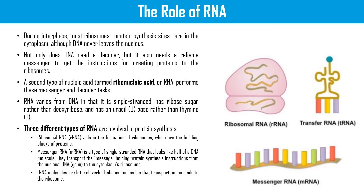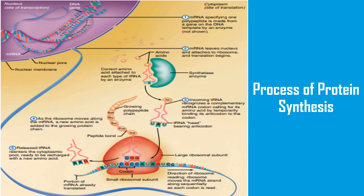Transfer RNA (tRNA) molecules are little cloverleaf-shaped molecules that transport amino acids to the ribosome. Protein synthesis involves two major phases: transcription, when complementary mRNA is made using the information in a DNA gene; and translation, when the information carried in the mRNA molecule is decoded and translated into protein. In the diagram, protein synthesis is shown in five steps. Step one: mRNA specifying one polypeptide is made from the gene on the DNA template by an enzyme. Step two: mRNA leaves the nucleus and attaches to the ribosome, and translation begins.